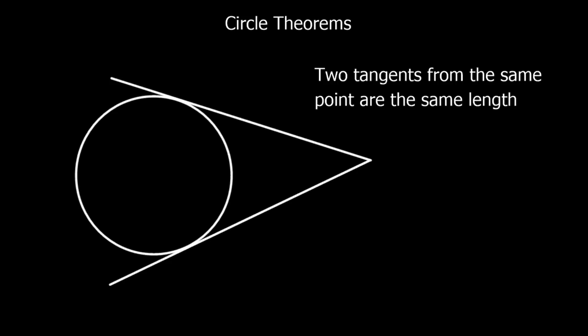So let's start with the first one. It says: two tangents from the same point are the same length. What we mean by that — this is the point, and these two lines are the tangents. A tangent is a line that touches a circle but doesn't go into it, it just touches it at one point. So what we're saying is that the length between these two points is equal to the length between those two points. Two tangents from the same point are the same length.